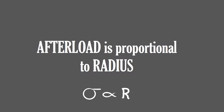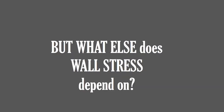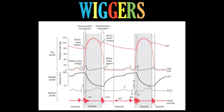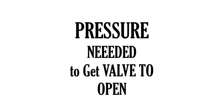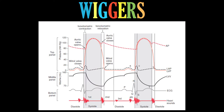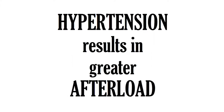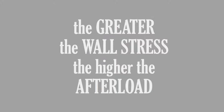Now, is that all there is to it? Of course not. Remember the isovolumetric contraction segment in the Wiggers diagram? In order to open the aortic valve, pressure in the ventricle must be greater than in the aorta. And aortic pressure is a surrogate for blood pressure. So if you have chronically high blood pressure, then the ventricle must generate much higher pressure — in other words, greater tension or wall stress — in order to open the aortic valve. The greater the wall stress, the higher the afterload.